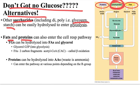Fats and proteins can also enter cellular respiration. For triglycerides, we can hydrolyze them into fatty acids and glycerol. Glycerol is a three-carbon chain that can enter glycolysis at the glyceraldehyde stage to form the three-carbon pyruvates. That's not a huge stretch since glycerol is already a three-carbon structure, so it doesn't take much to have it enter the glycolysis pathway.